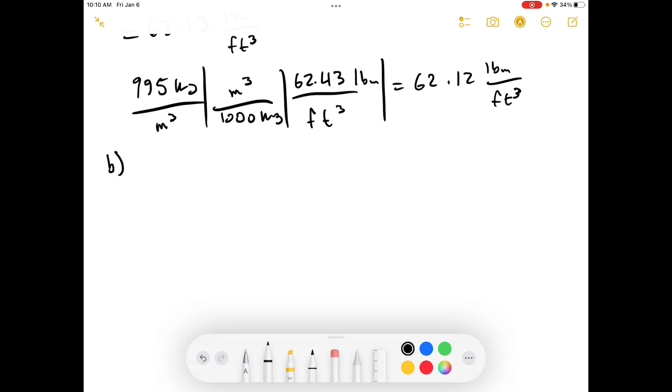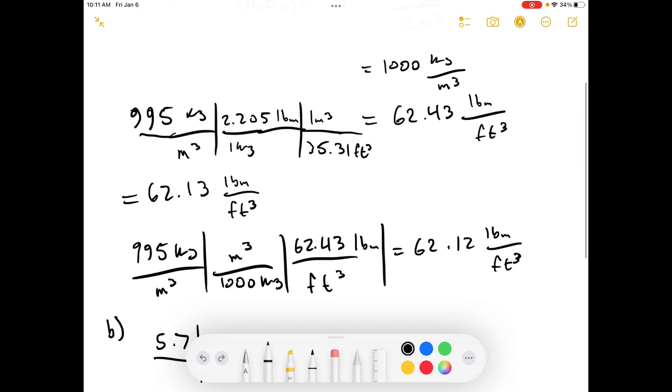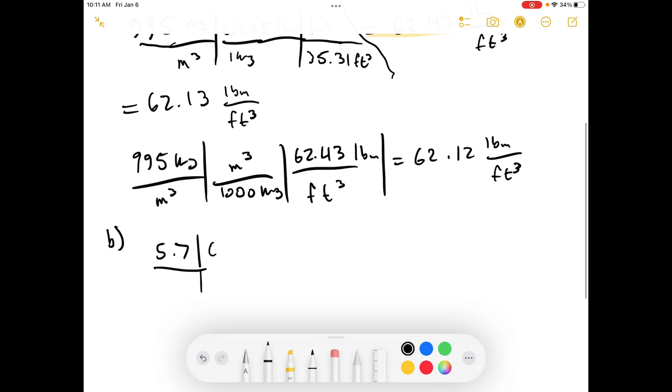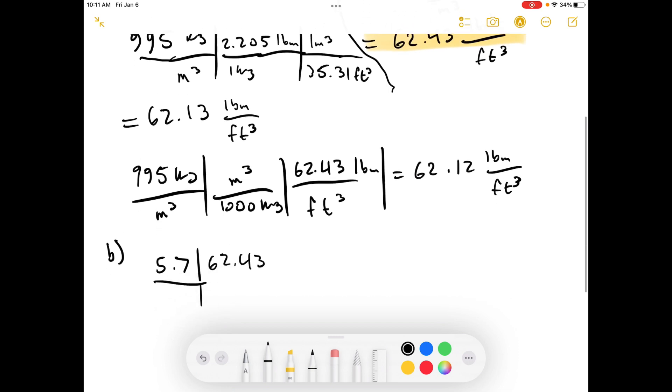Part B: a solid with a specific gravity of 5.7. So if the specific gravity is 5.7, then that means we can use our conversion factor right here. I'll separate this a little bit. We can use our conversion factor right there and just say 5.7 times 62.43 pounds mass per foot cubed equals 355 pounds of mass per foot cubed.